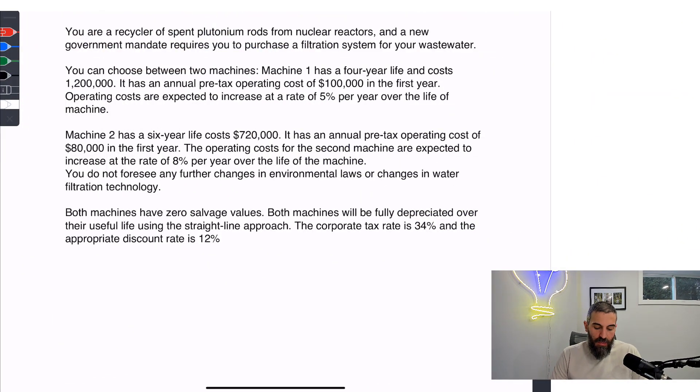In the question it says you are a recycler of spent plutonium rods from nuclear reactors and a new government mandate requires you to purchase a filtration system for your wastewater. You can choose between two machines. Machine 1 has a four-year life and costs $1.2 million. It has an annual pre-tax operating cost of $100,000 in the first year. Operating costs are expected to increase at a rate of 5% per year over the life of the machine.